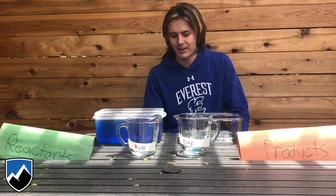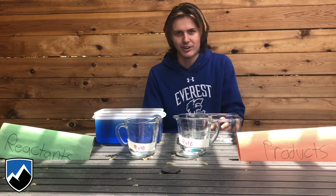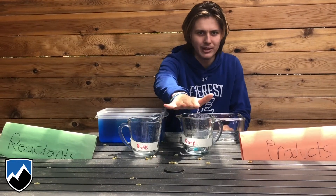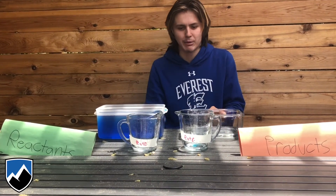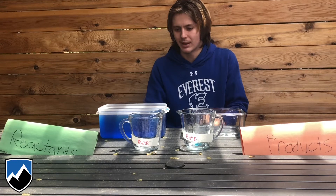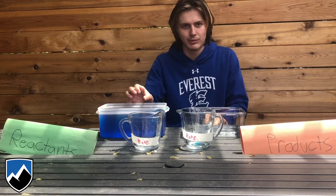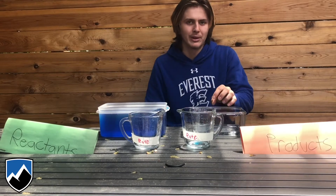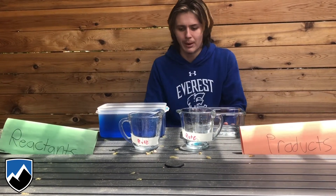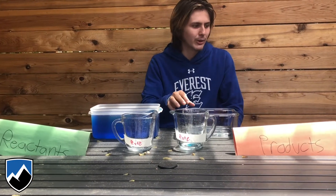Dynamic equilibrium is the same thing — the product and reactant reach the same point where they aren't changing anymore. However, it's caused by the rate. These two measuring cups are exchanging the same amount from each, so there's a net loss of zero. Let's say 250 milliliters of reactant is moving over to the product, but 250 milliliters of product is moving over to reactant. So we've hit a point where no numbers are changing, everything is staying the same, but there is still a reaction going on.